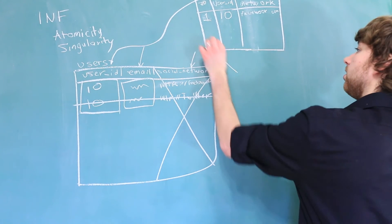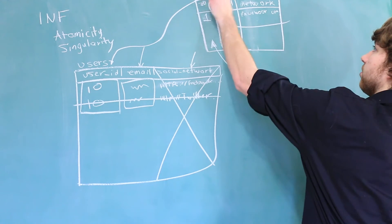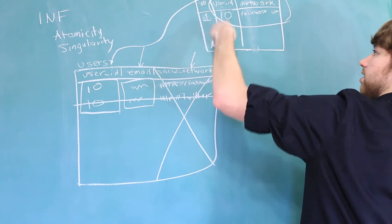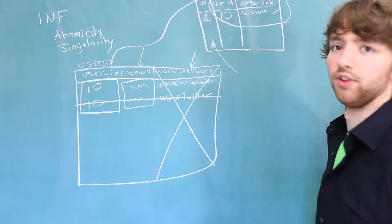Now this column here, you could potentially get away without having it because you could have this as the combination for the primary key. But in this situation, I think this way makes a little bit more sense, and that's how I'm going to go for that one for now.